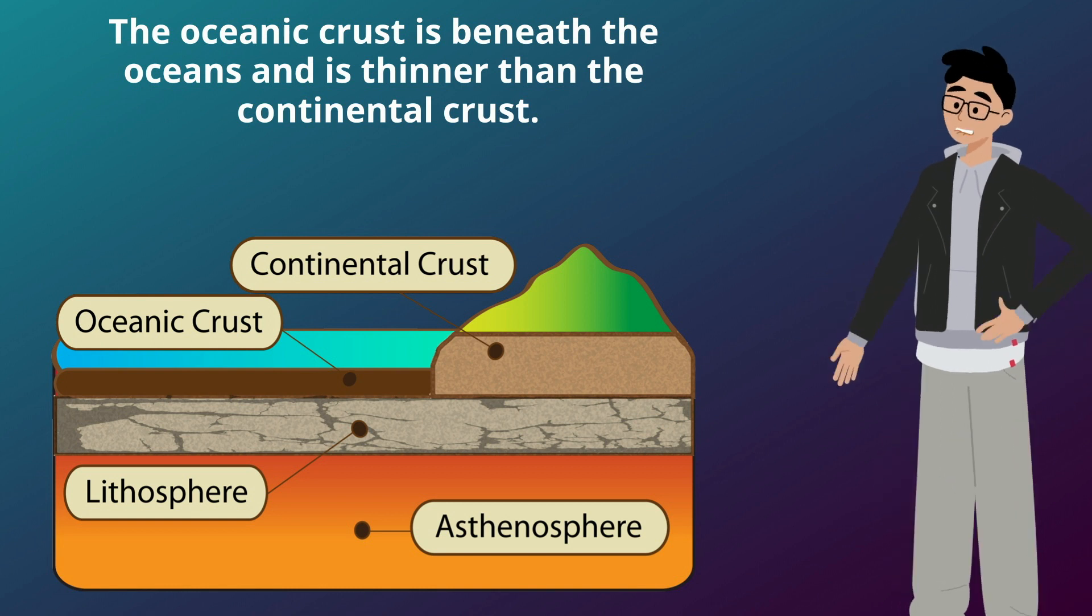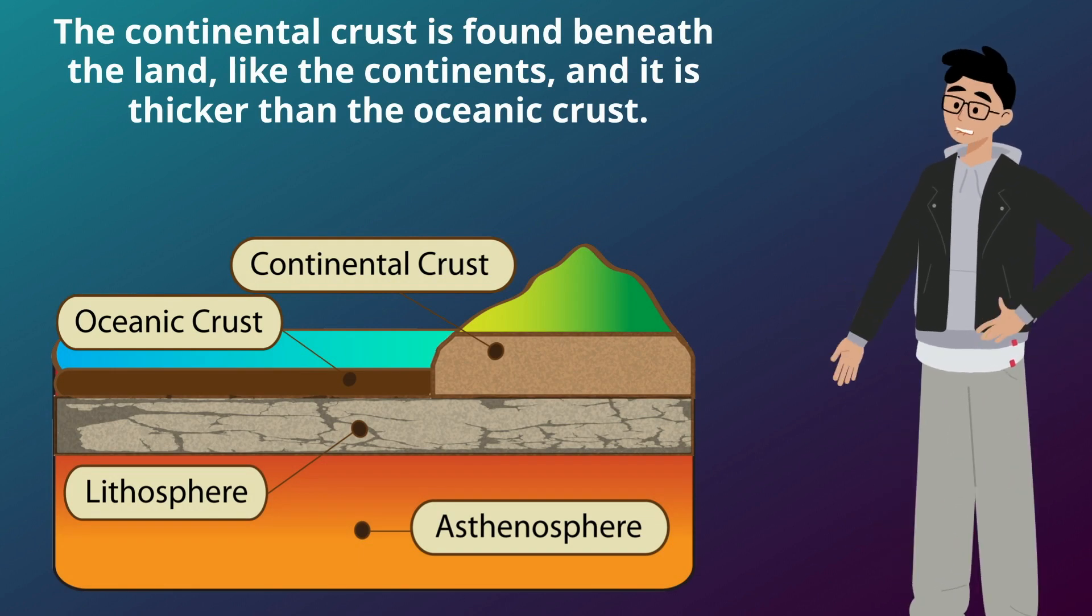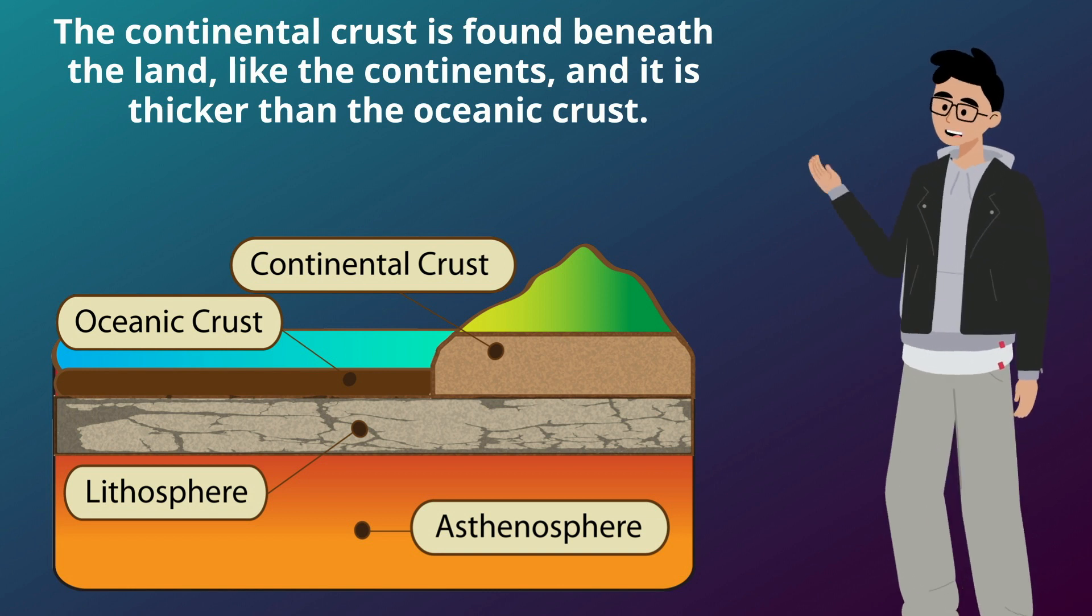The oceanic crust is beneath the oceans and is thinner than the continental crust. The continental crust is found beneath the land, like the continents, and it is thicker than the oceanic crust.